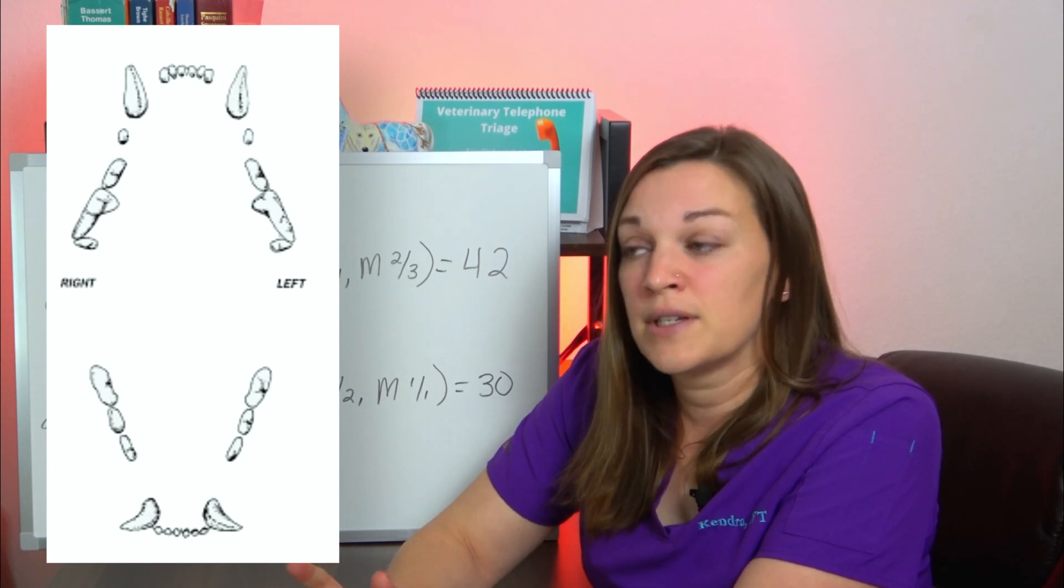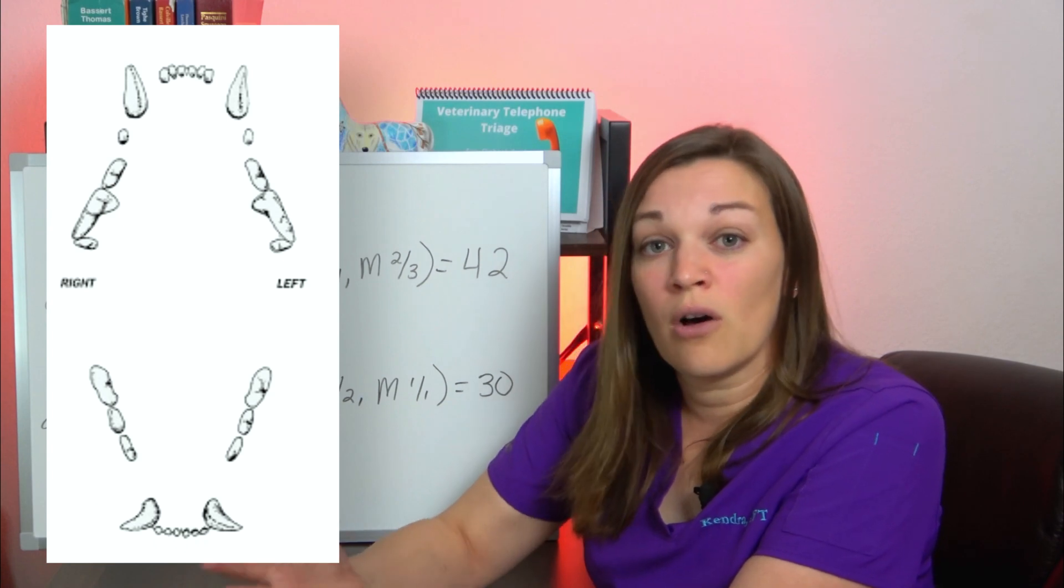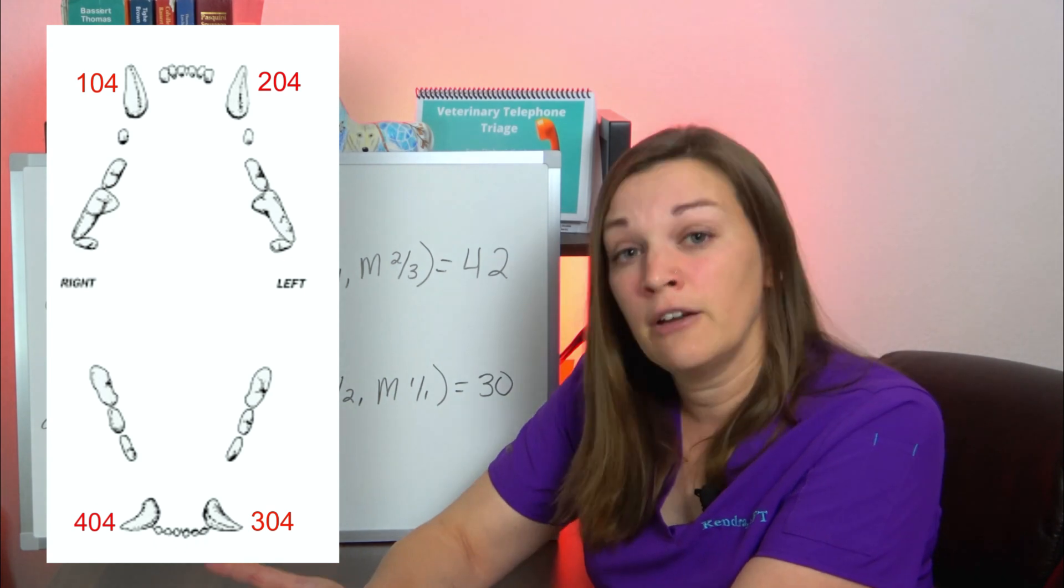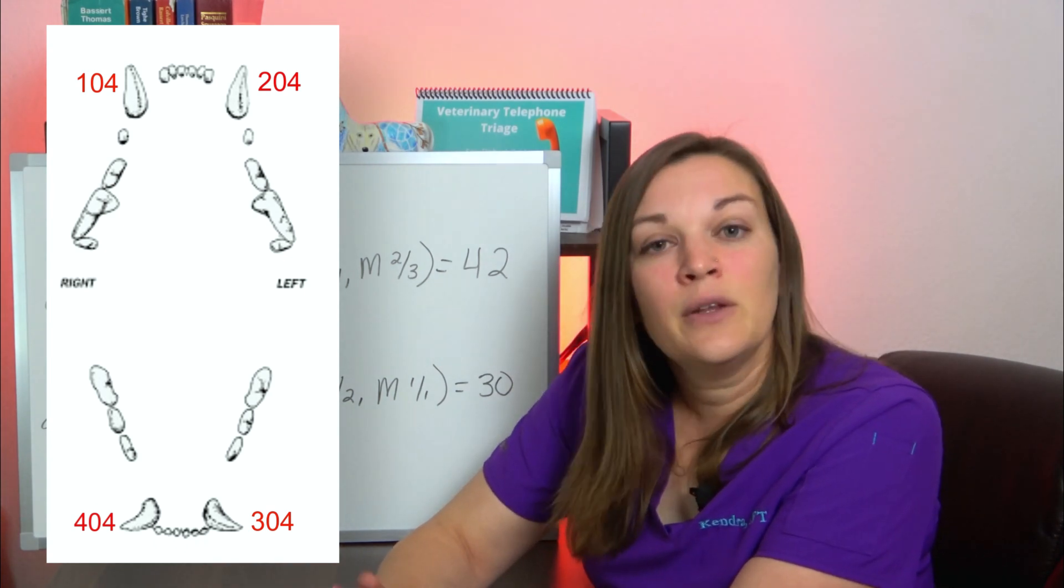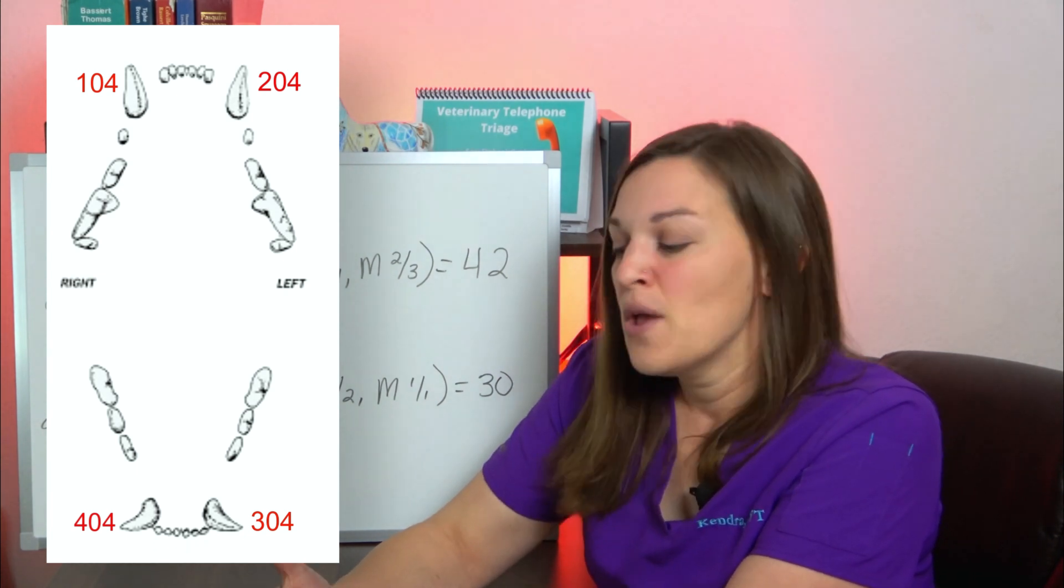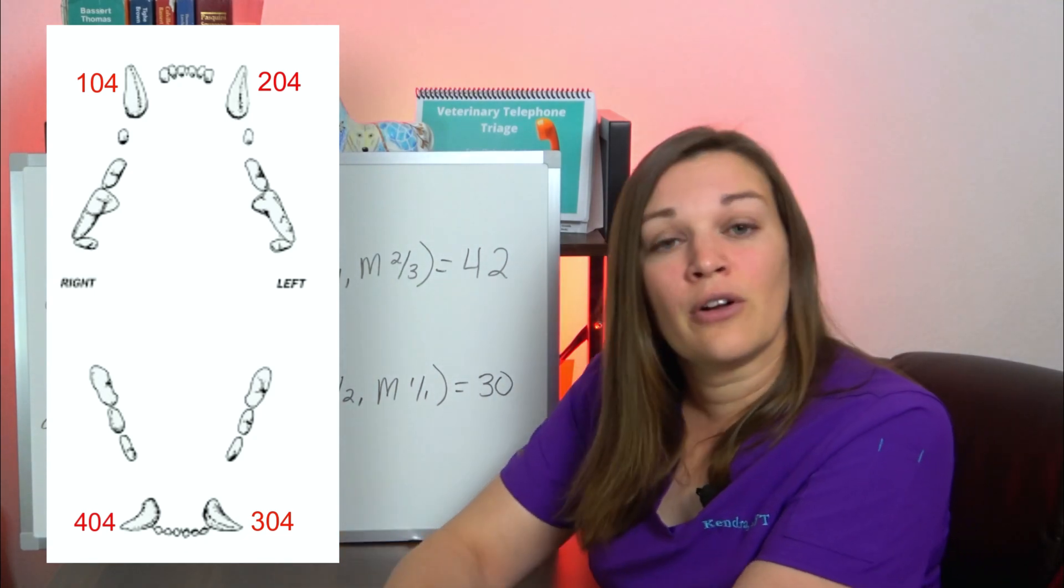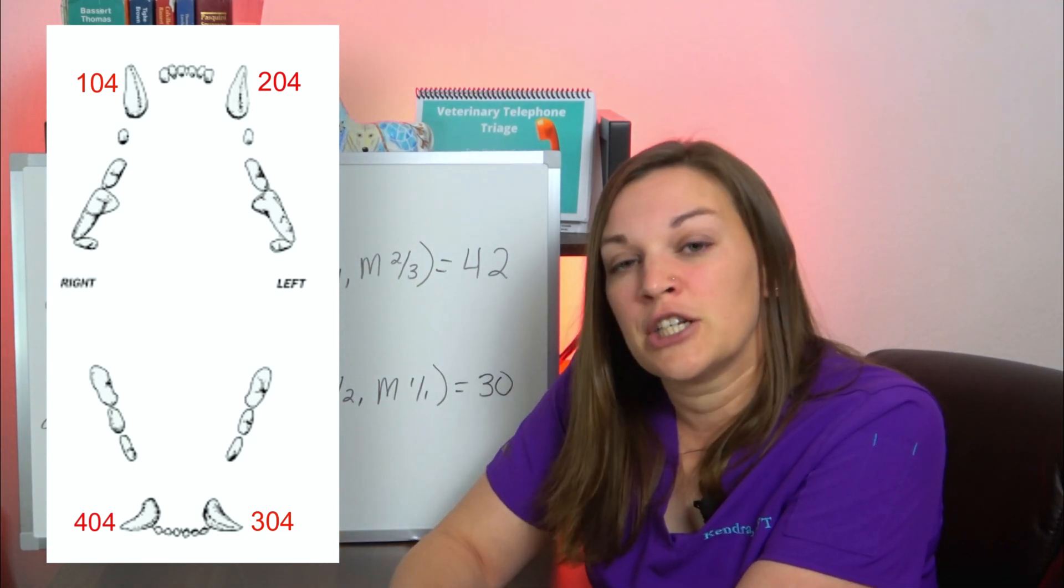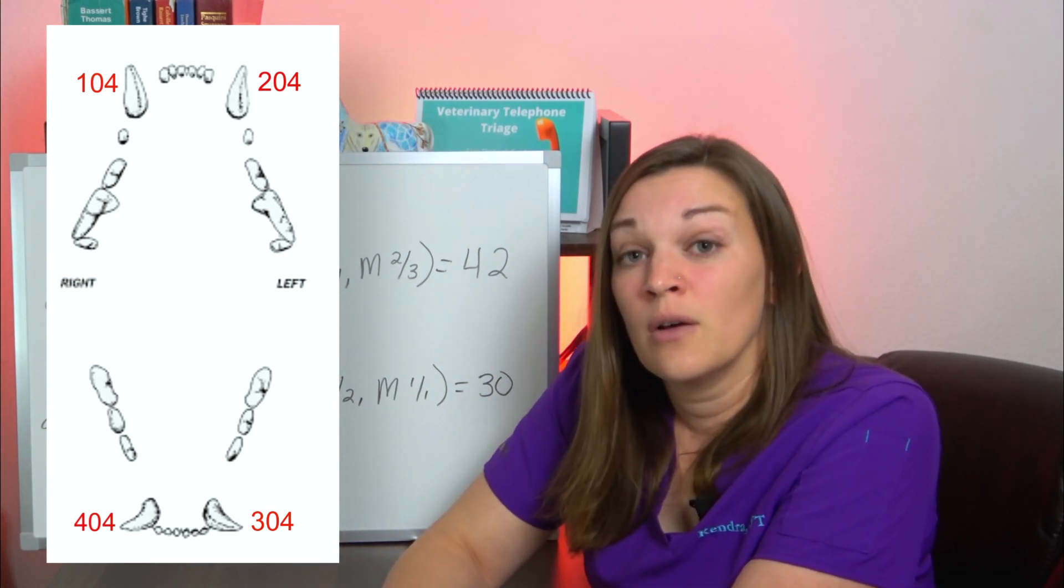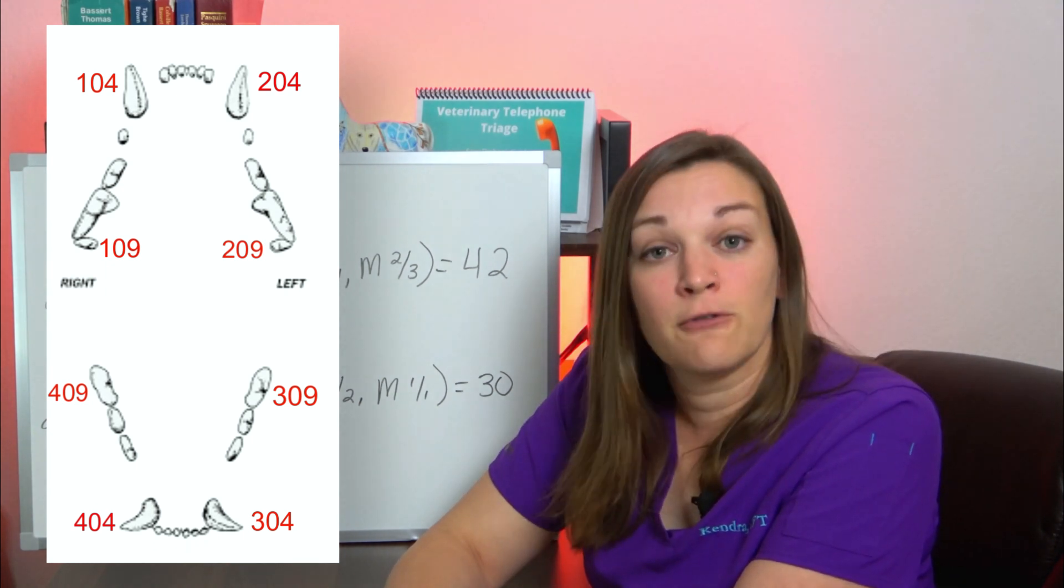The first thing that I want to talk about is the rule of 4 and 9. The rule of 4 states that your canine tooth will always end in 4. So that'd be our 104, 204, 304, and 404. And then the rule of 9 states that the tooth ending in 9, number 9, will be your first molar. So in cats, on our dental formula, we learned that they only have one molar in each of their arcades. So the last tooth in each arcade on this feline dental chart will be a number 9. So 109, 209, 309, and 409.